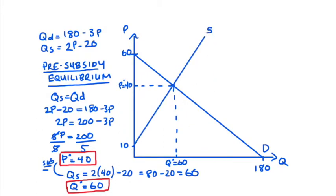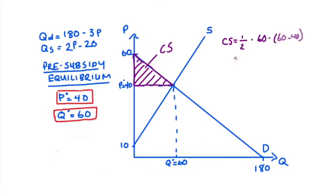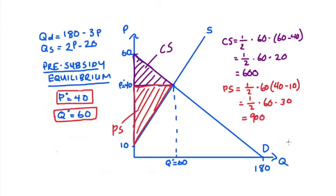Let's look at welfare prior to the subsidy. Consumer surplus is the triangle below the demand curve and above the price: CS = ½ × 60 × (60 − 40) = ½ × 60 × 20 = 600. Producer surplus is the area above the supply curve and below the price: PS = ½ × 60 × (40 − 10) = ½ × 60 × 30 = 900. Total surplus = CS + PS = 600 + 900 = 1,500.